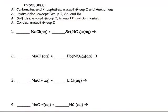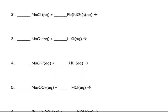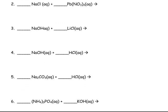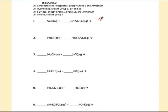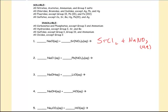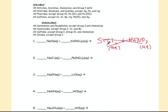Let's try some practice problems with the solubility rules. For the first one, it's a double replacement. One product is a nitrate — all nitrates are soluble, so that's aqueous. The other product is a chloride — all chlorides are soluble, and strontium is not an exception. So both products are aqueous, meaning no reaction.